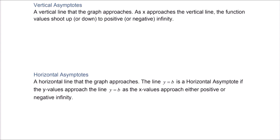A vertical asymptote is a vertical line that the graph approaches. As x approaches the vertical line, the function values shoot up or down to positive or negative infinity. An example we've seen is the reciprocal function. Notice that the y-axis, or the line x equals 0, is a vertical asymptote in this case.